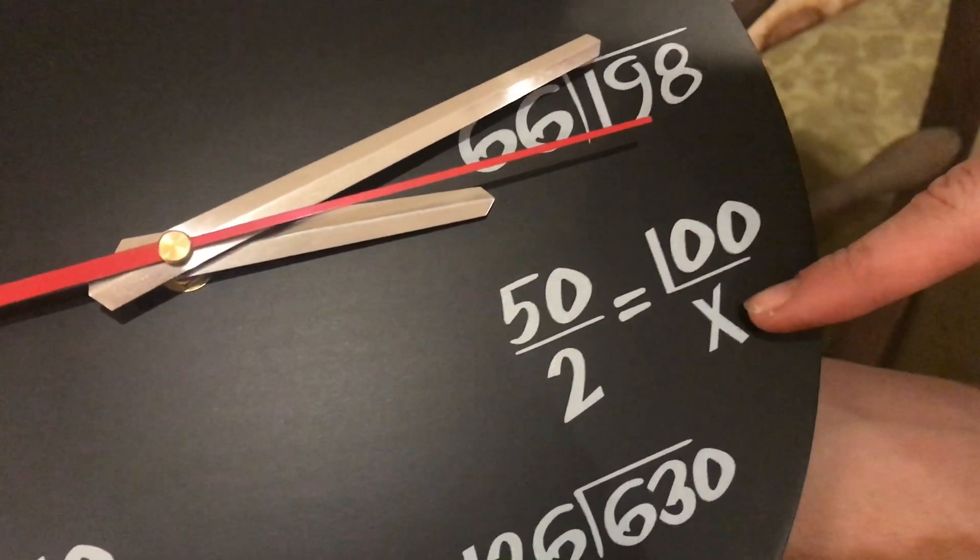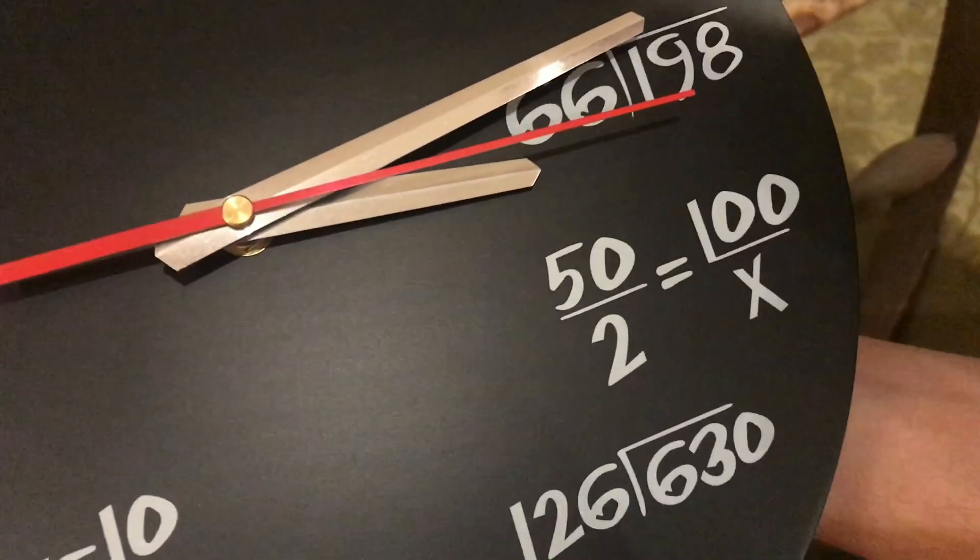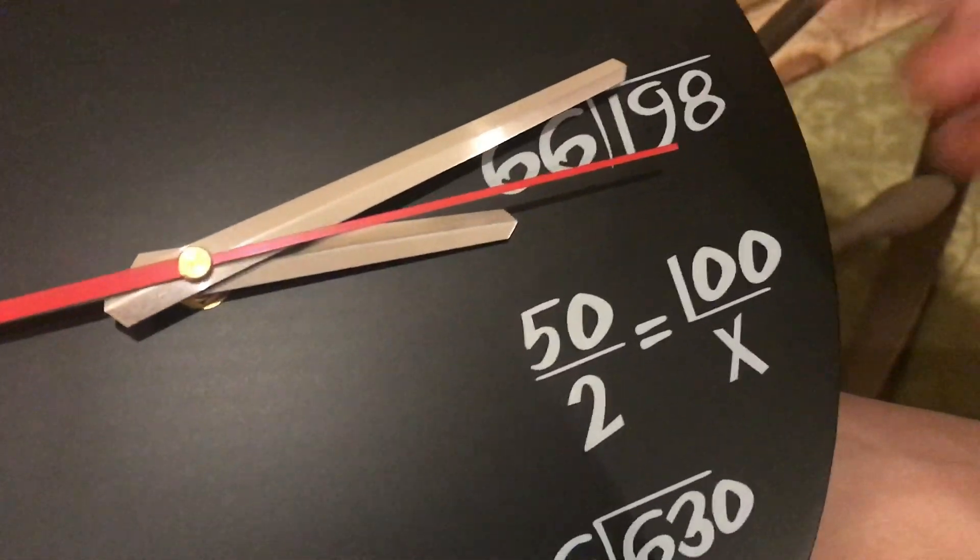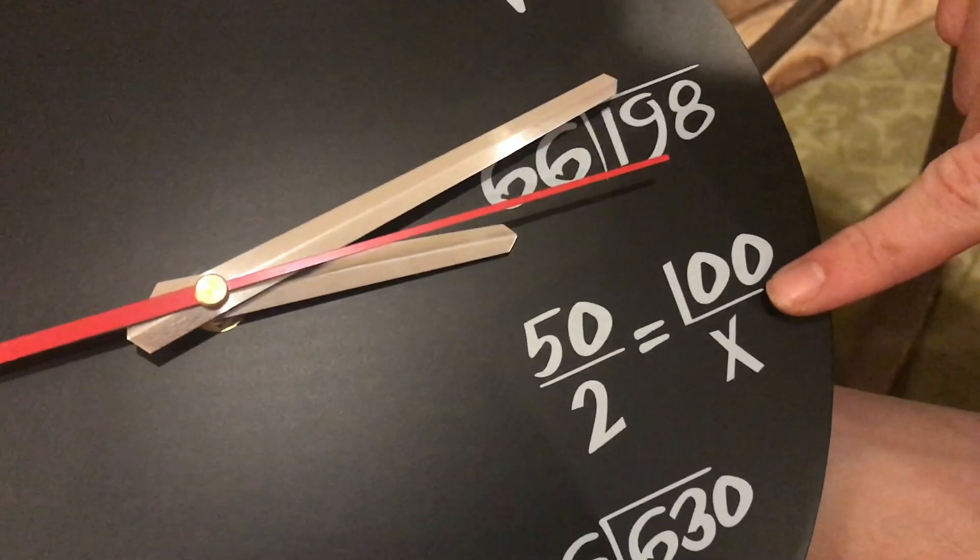So 50 times x equals 2 times 100, so 50x equals 200, and divide both sides by 50, you get x equals 4. So this would be 4.